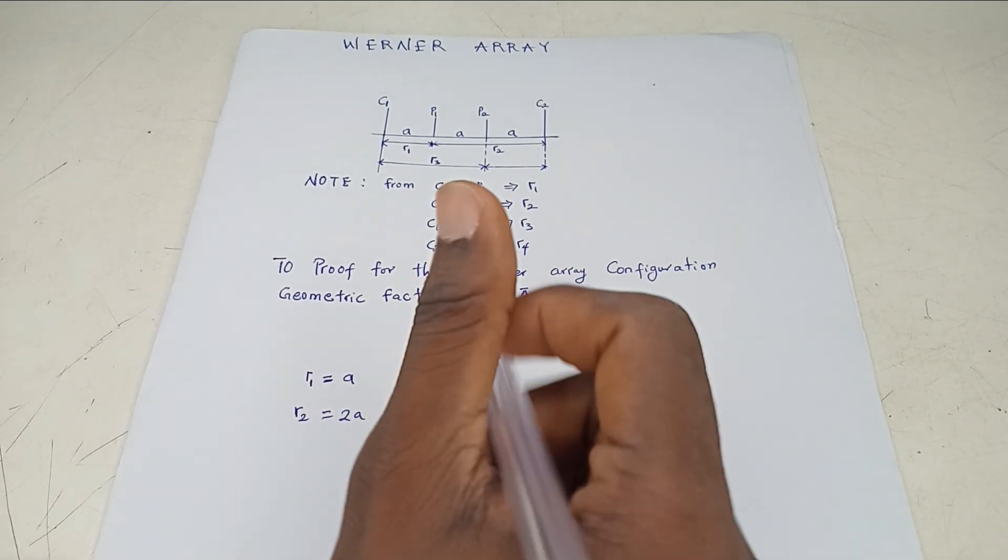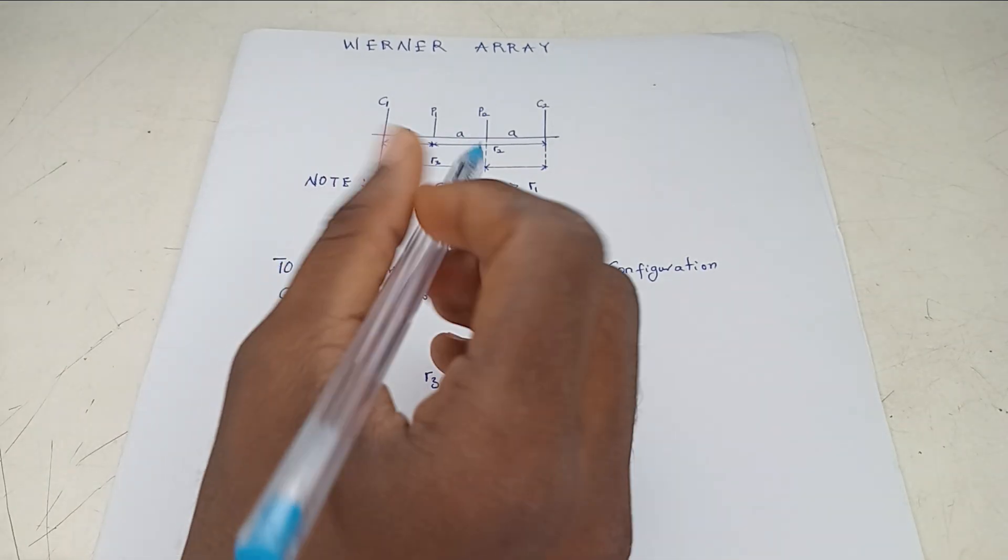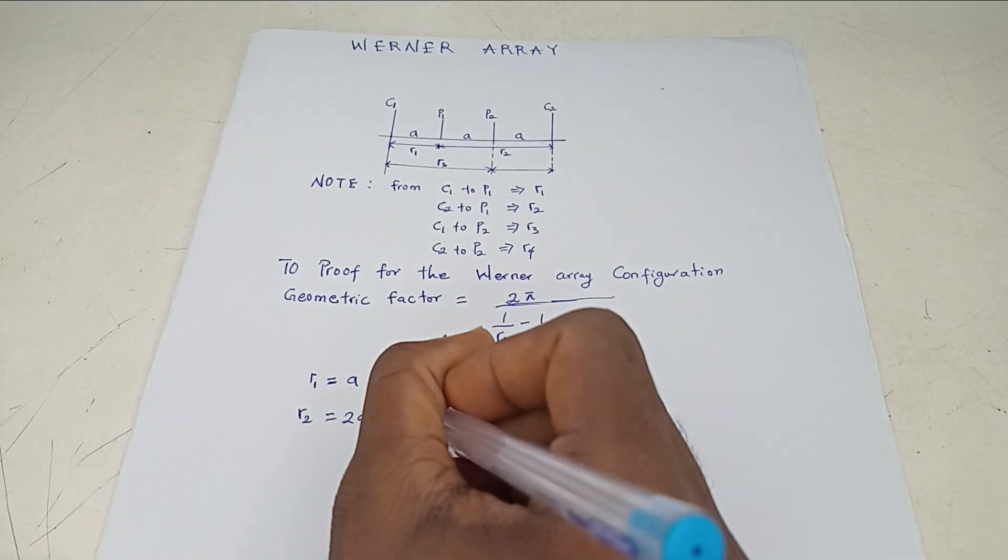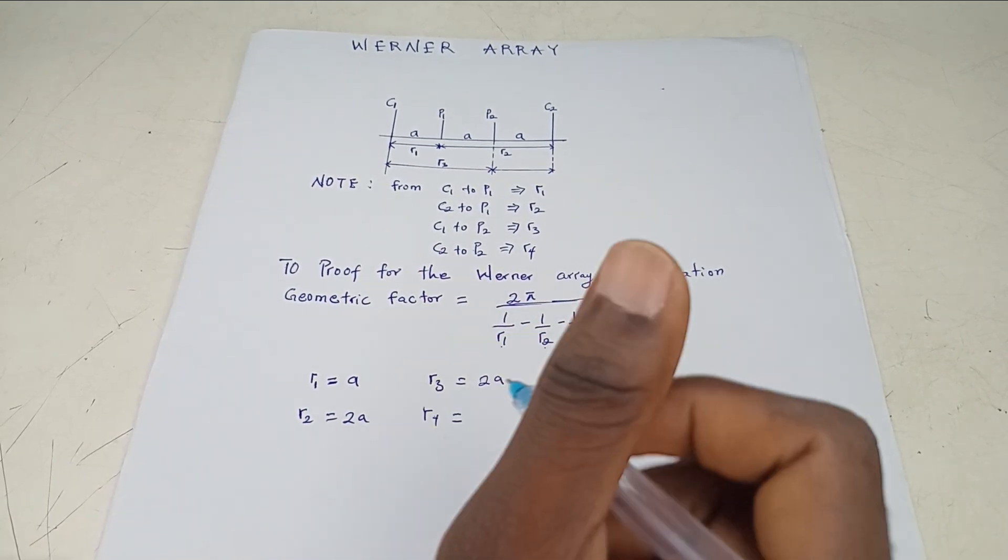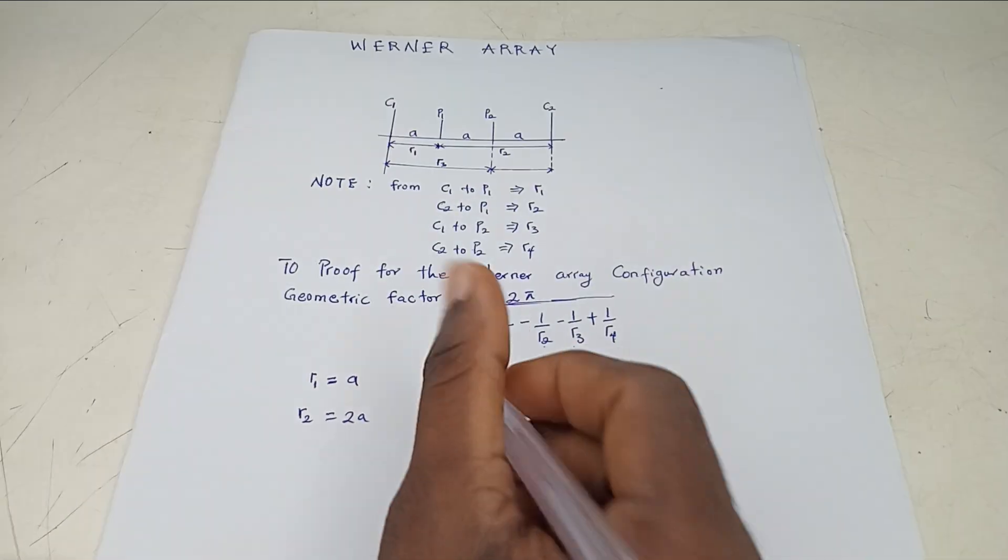R3 is C1 to P2, which is A plus A. That's 2A. And R4 is C2 to P2. And that's just A. Good.